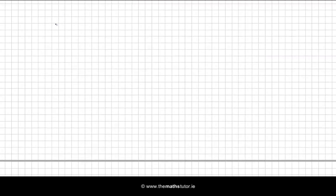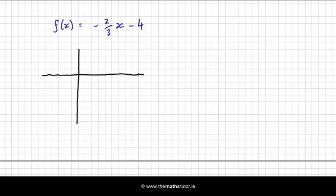Let's say f(x) is equal to minus 2 over 3 x minus 4. OK, this might be a tricky one at first glance. But using the skills that we're learning, let's see if we can put them to use. Our y-intercept is minus 4, so that's here.